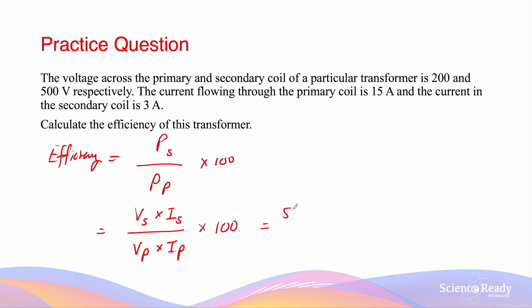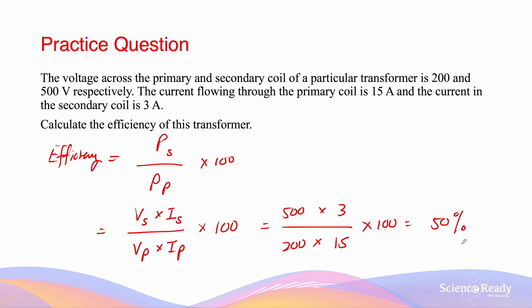V_S is 500 volts, I_S is 3 amps, divided by V_P which is 200 volts, and I_P is 15 amps, and this fraction is times 100, which gives us an efficiency of 50%. A transformer with 50% efficiency means that exactly half of the energy from the primary coil has been transformed into a different form — in other words, only 50% of the energy remains as electrical energy in the secondary coil.